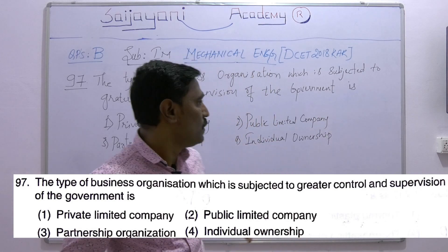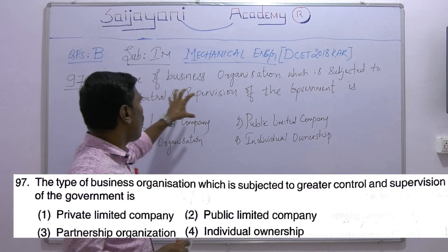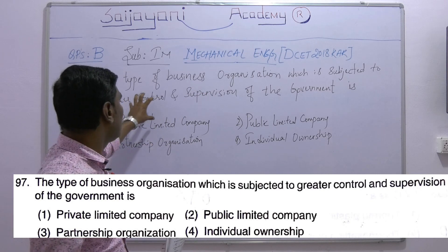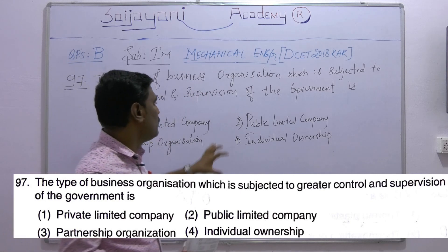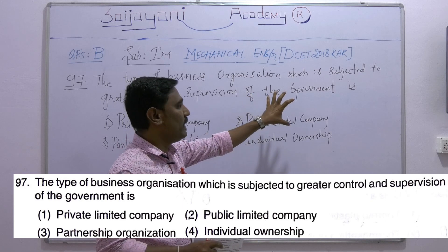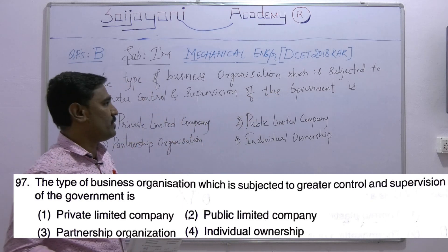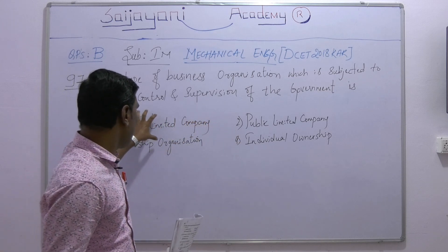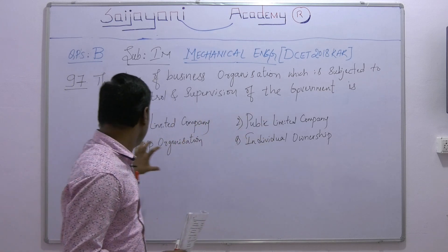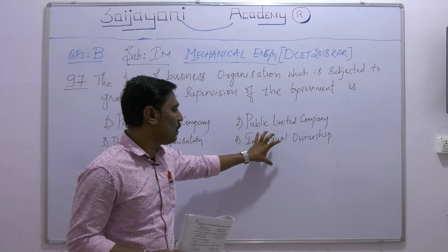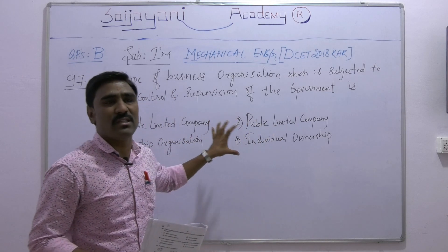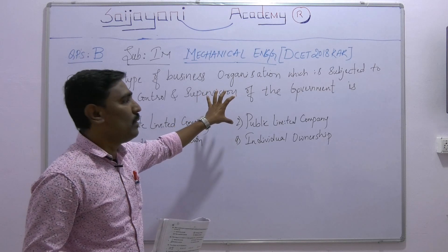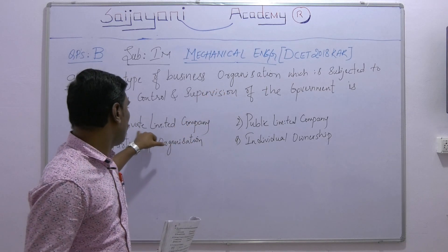So the question is: which type of business organization is subjected to greater control and supervision of the government? First, we note that private limited company, public limited company, partnership organization, and individual ownership are all business organizations. Now we will discuss the risks and supervision involved in each.